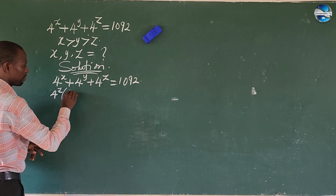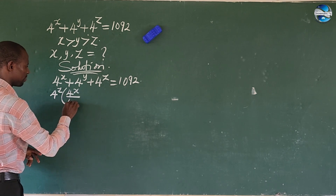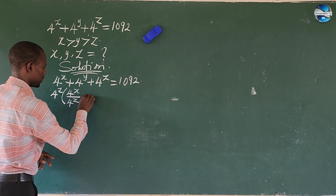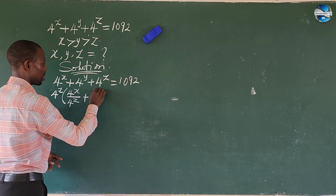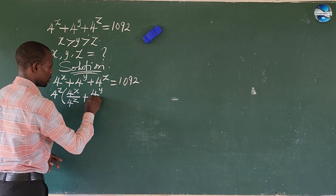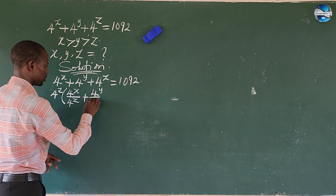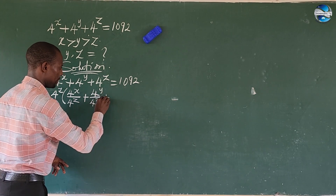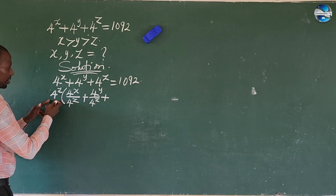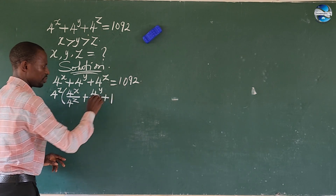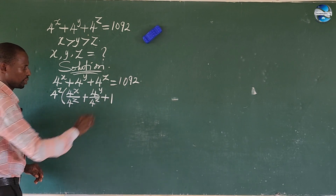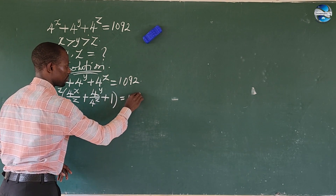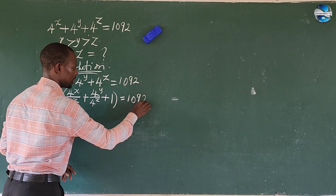So we are using this to divide. We are left with 4 to the power of x all over 4 to the power of z, plus 4 to the power of y all over 4 to the power of z, plus 1, close bracket, equal to 1092.